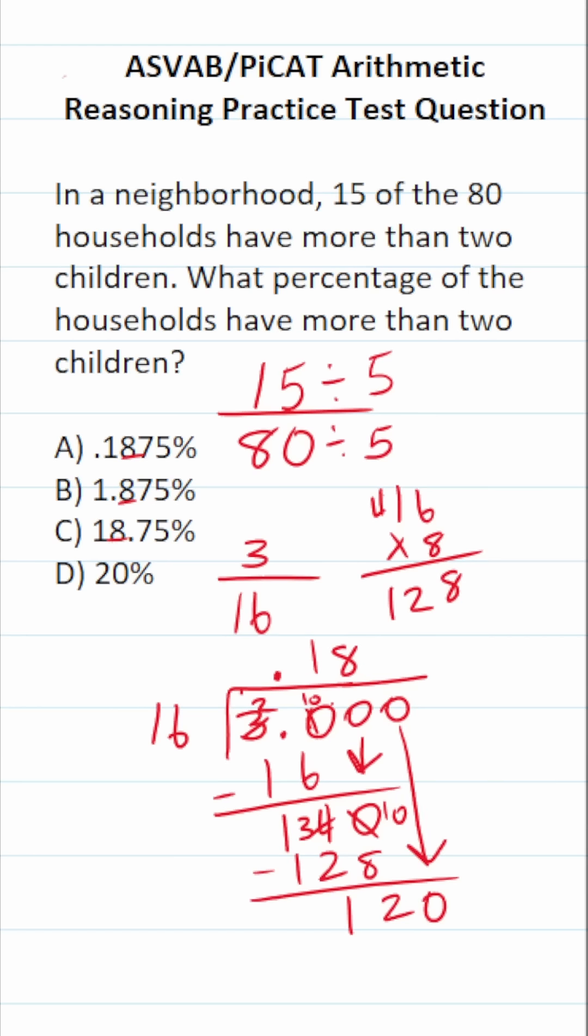We just saw that 16 times 8 was 128. Now we're asking ourselves, how many times does 16 go into 120? Well, you know that's going to be 7 times. And 16 times 7, if you can't do that mentally, do it off to the side. 7 times 6 is 42, carry a 4. 7 times 1 is 7, 8, 9, 10, 11. So this is going to be 112.